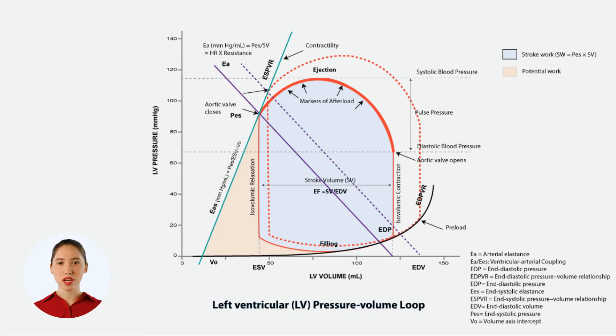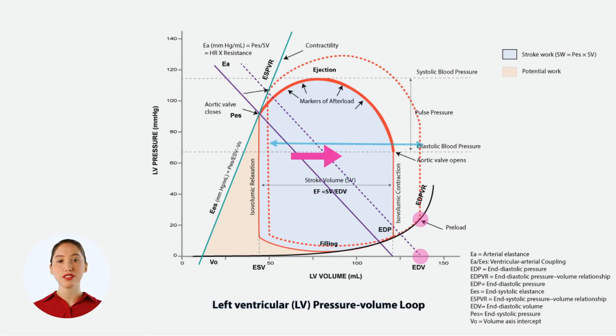To recap: arterial elastance does not change with increased preload. The line is only shifted to the right as a result of increased stroke volume, end diastolic volume, and end systolic pressure.